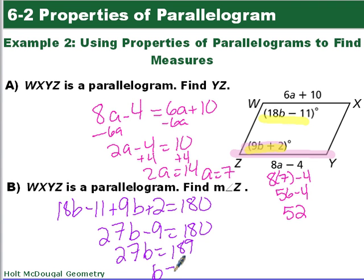We divide both sides by 27. B equals 7. And we want to find the measure of angle Z. So angle Z is going to be 9 times 7 plus 2, which is 63, plus 2, which equals 65 degrees.